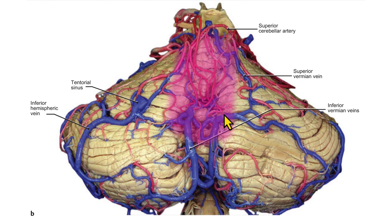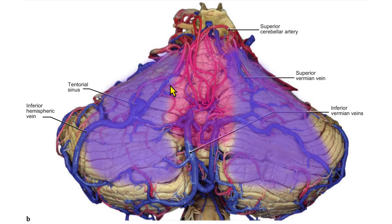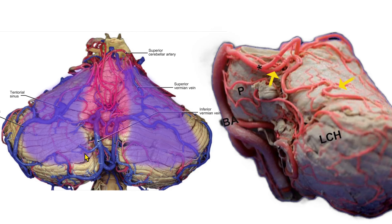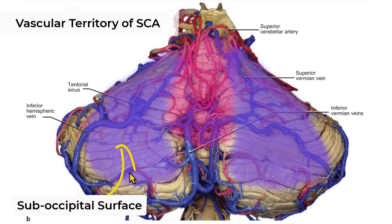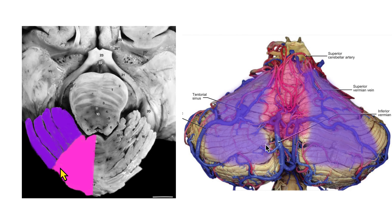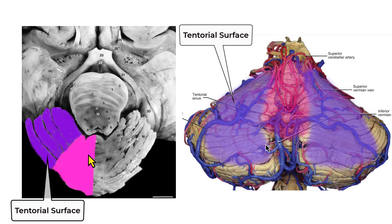The area marked in pink is supplied by the cranial division of the superior cerebellar artery — these are the superior vermian branches. The area marked in purple is supplied by the caudal division of the superior cerebellar artery, representing cortical branches supplying the tentorial surface as well as the suboccipital surface of the cerebellar hemisphere. In this specimen, the superior vermis is supplied by the cranial trunk and the tentorial surface by the caudal division.